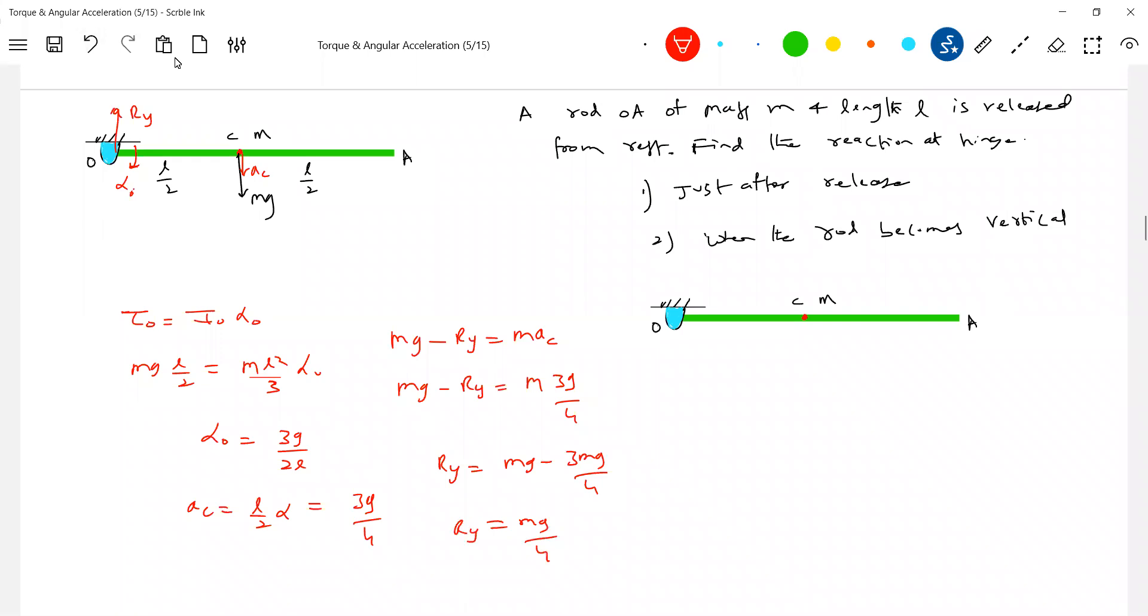So why do that reaction will come? Look at the ac. Ac is how much? 3g by 4. You want to ask me a question here now. Sir, why this? Why not ac equal to g because only mg is acting? No. Even the reaction will act here.